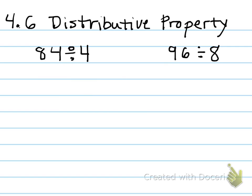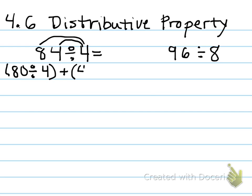Let's go over distributive property in Lesson 4.6. This is when you break apart the dividend and make two smaller division problems that are easier. Let's look at 84 divided by 4 first. I know 4 can go into 80, and I know 4 can go into 4, so let's just break it apart by place value. One problem would be 80 divided by 4, plus 4 divided by 4.